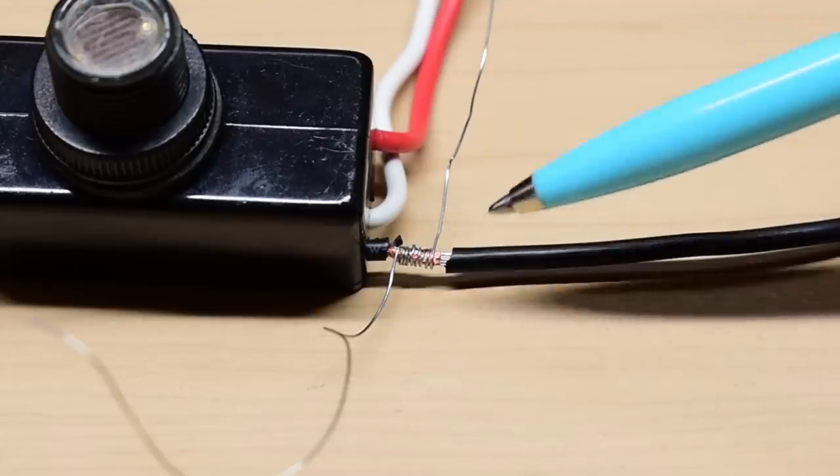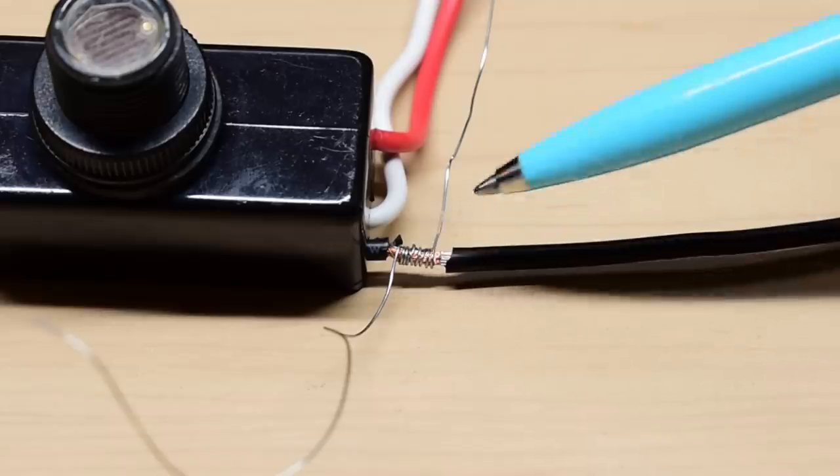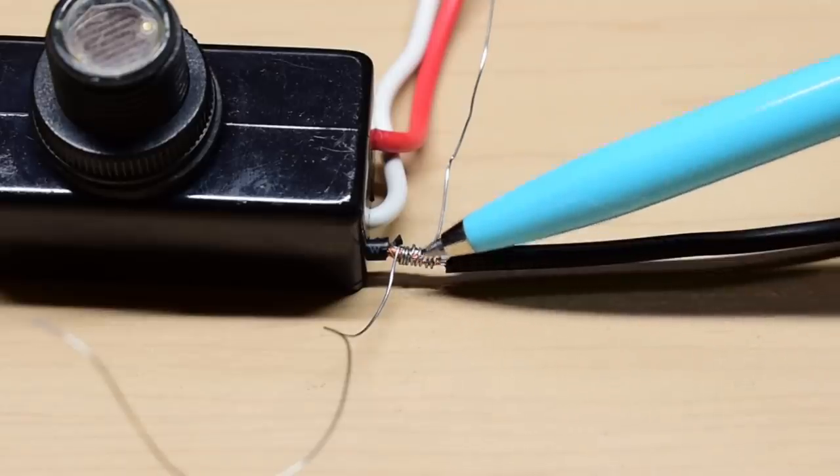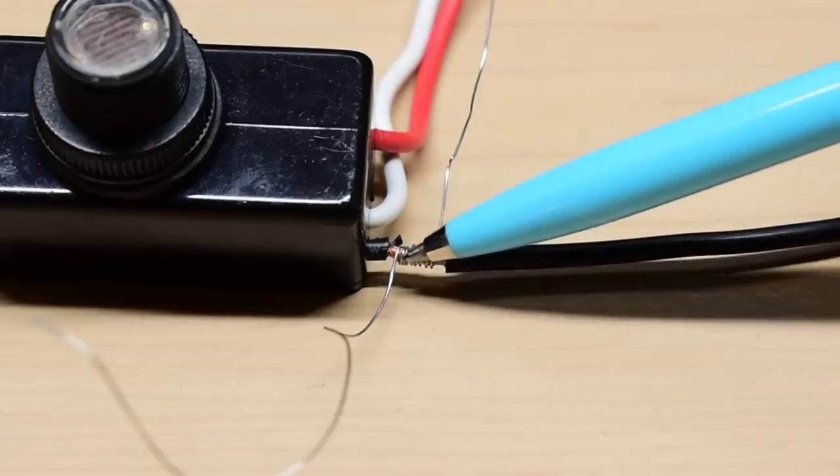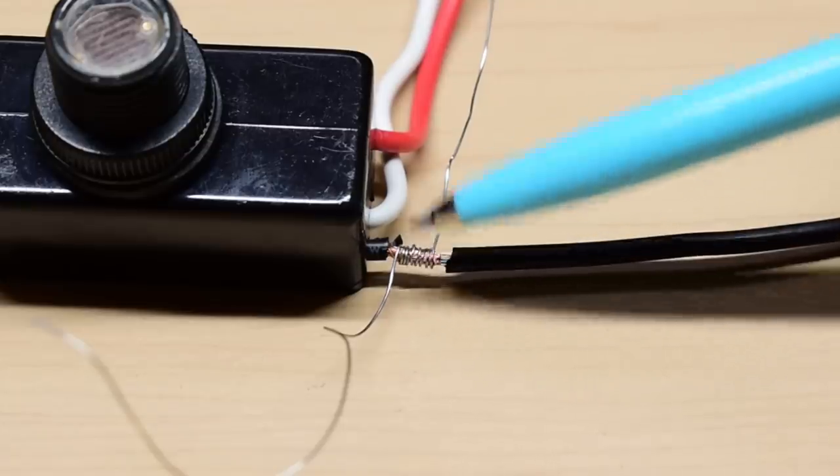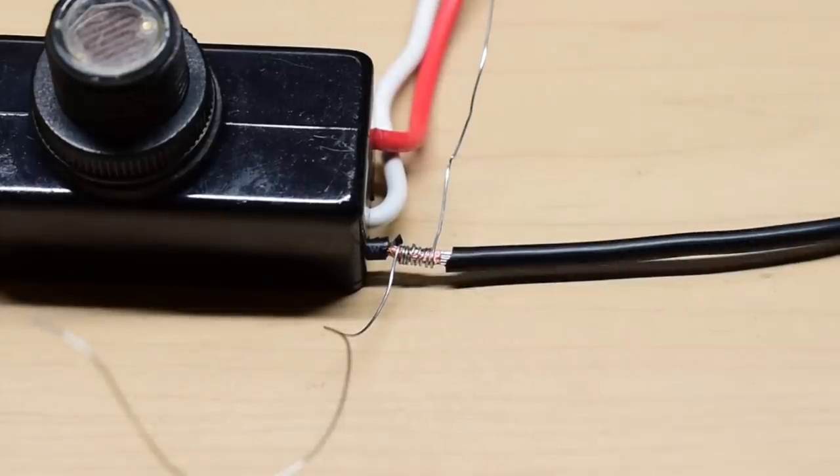That connection is going to be extremely strong because the wires are tight against each other, and you also have the surface area of the wire that's going to be conducting electricity, making a good connection all the way along the outside through the use of this 26 gauge tinned copper wire.